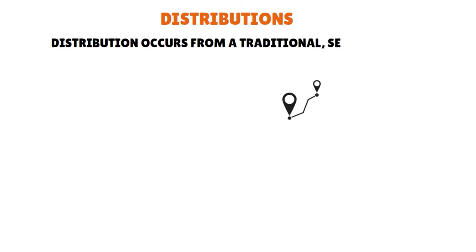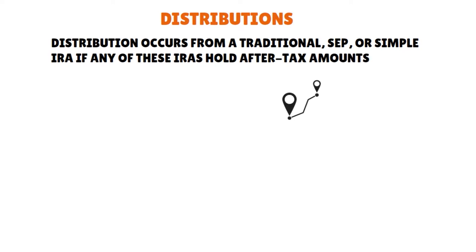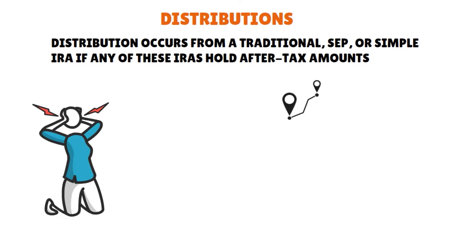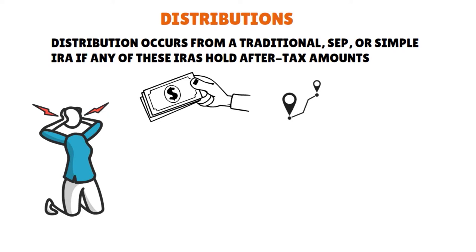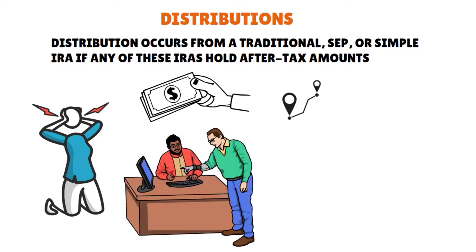An important thing you need to think about when it comes to Form 8606 is distributions — distributions are key here. You have to keep some tracking. Distributions are prorated, so Form 8606 should be filed each year that a distribution occurs from a traditional, SEP, or SIMPLE IRA if any of these IRAs hold after-tax amounts. Failure to file Form 8606 could result in the individual paying income tax and an early distribution penalty on amounts that should be tax and penalty-free. If you have after-tax amounts in your traditional IRA, when taking a distribution, you must determine how much of the distribution is attributable to the after-tax amount. You are deemed to have a cost basis equal to the amount of your after-tax contribution.